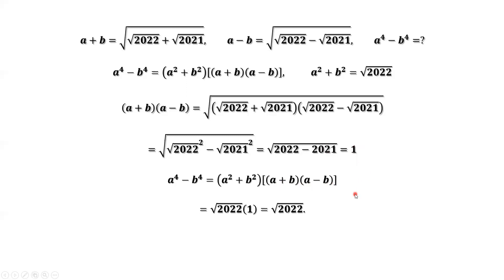Now we are ready to calculate A to the power of 4 minus B to the power of 4. The answer is the square root of 2022 times 1, which equals the square root of 2022. Thanks for watching and I'll see you next time.